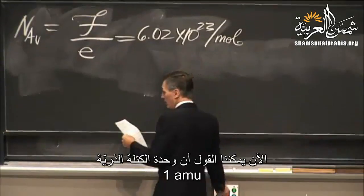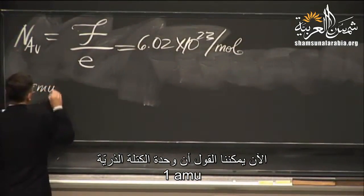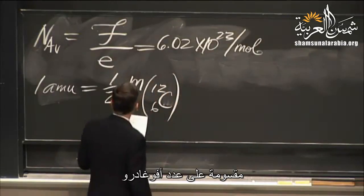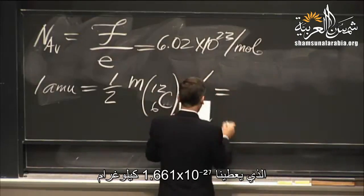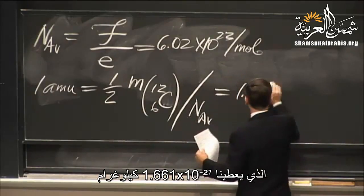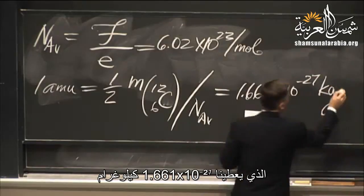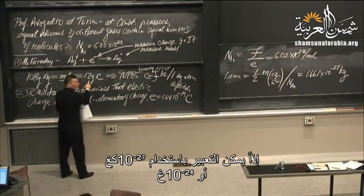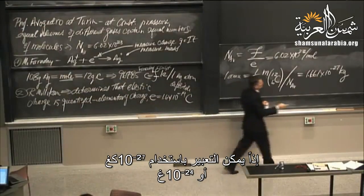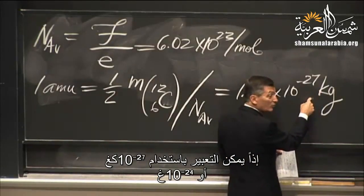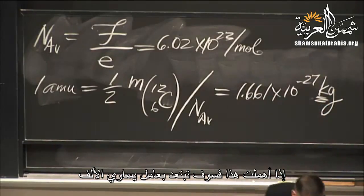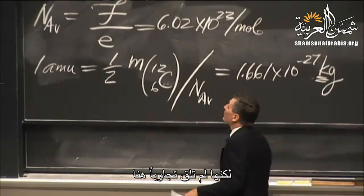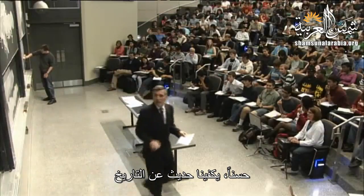Now we can define the atomic mass unit. One atomic mass unit equals one-twelfth of the mass of carbon-12 divided by the Avogadro number, which gives 1.661×10⁻²⁷ kilograms. Be careful: the system is a little rickety because the standard is defined as 12 grams, not 12 kilograms. So this is either 10⁻²⁷ kg or 10⁻²⁴ g — just be careful, or you'll be off by a factor of 1,000.